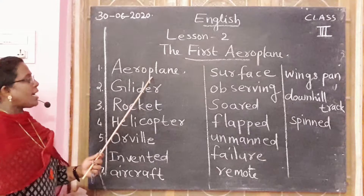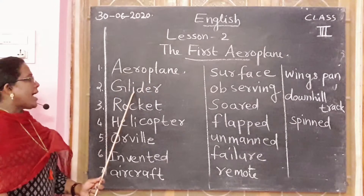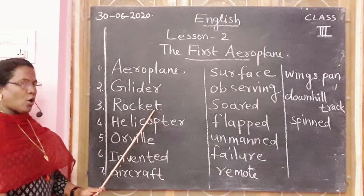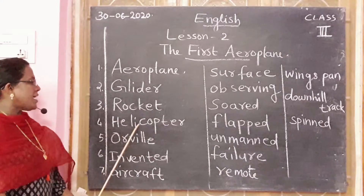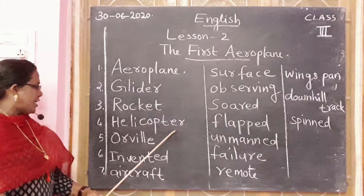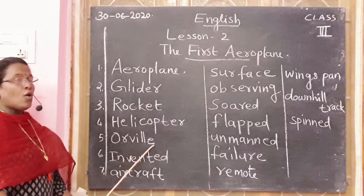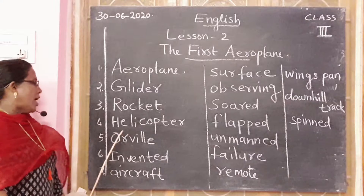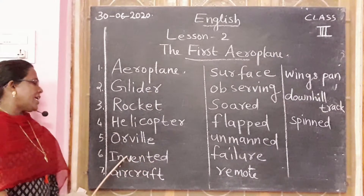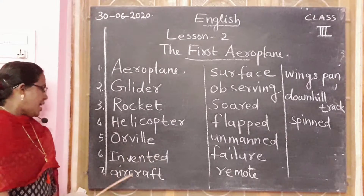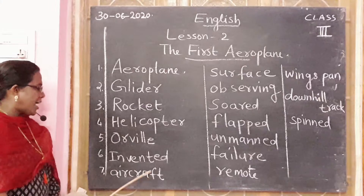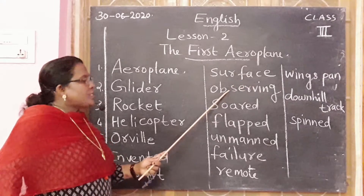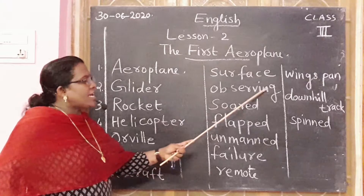Spelling — aeroplane: A-E-R-O-P-L-A-N-E, aeroplane. Glider: G-L-I-D-E-R, glider. Rocket: R-O-C-K-E-T, rocket. Helicopter: H-E-L-I-C-O-P-T-E-R, helicopter. Orville: O-R-V-I-L-L-E. Invented: I-N-V-E-N-T-E-D, invented. Aircraft: A-I-R-C-R-A-F-T, aircraft. Surface: S-U-R-F-A-C-E, surface. Observing: O-B-S-E-R-V-I-N-G, observing.